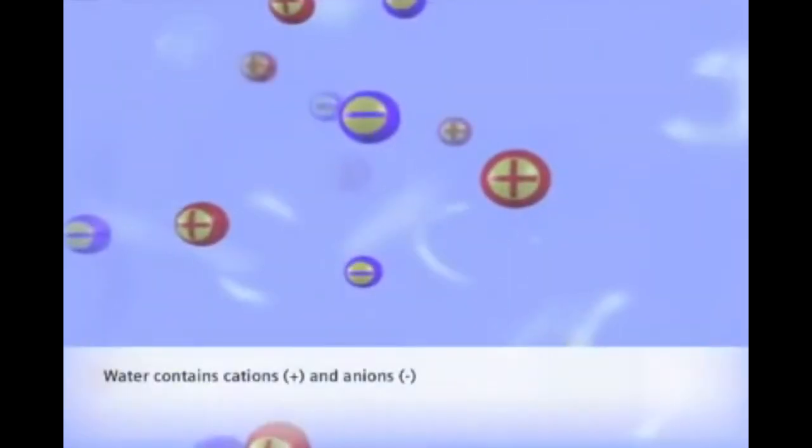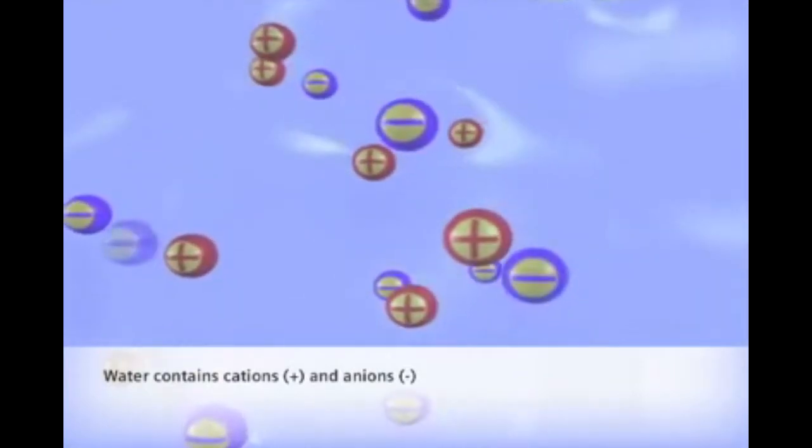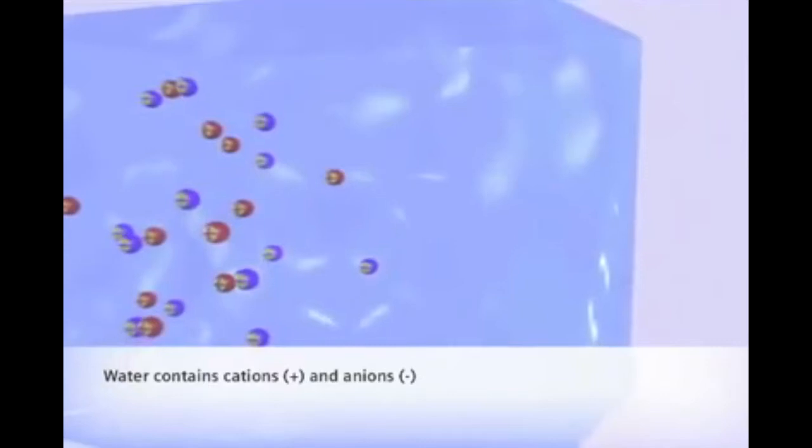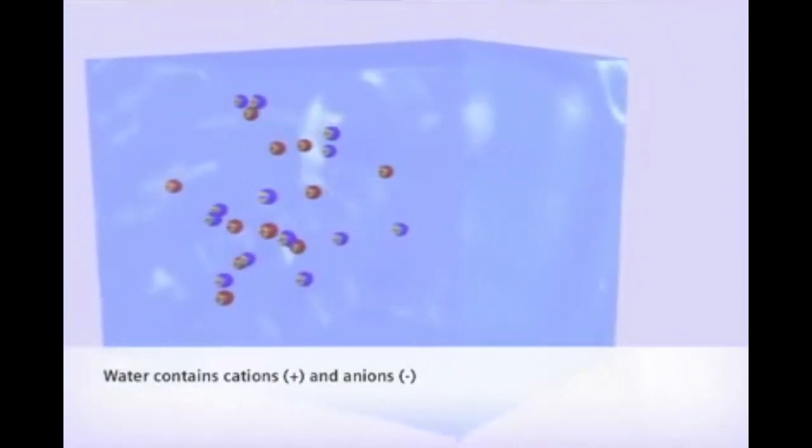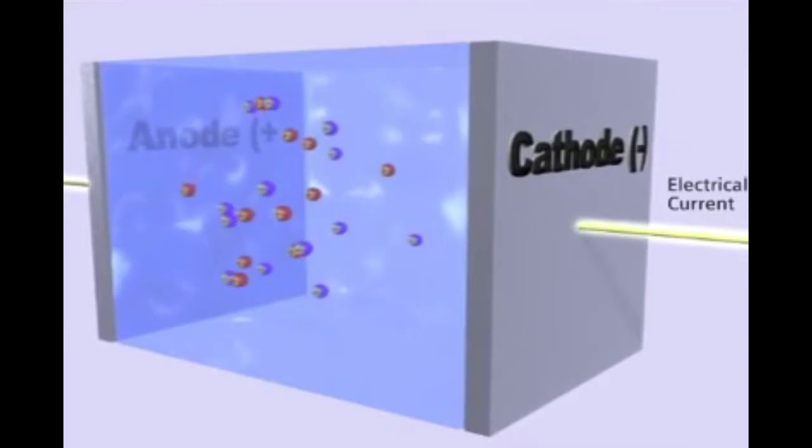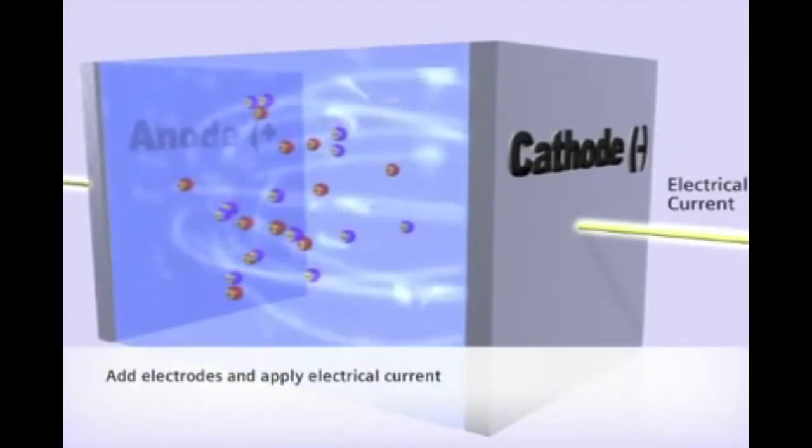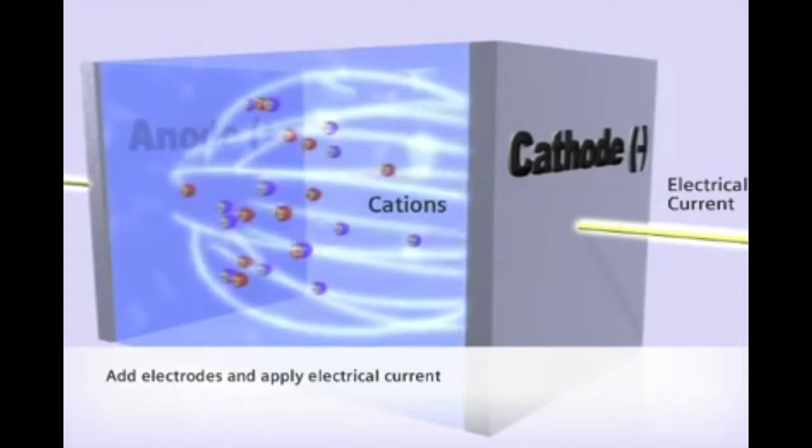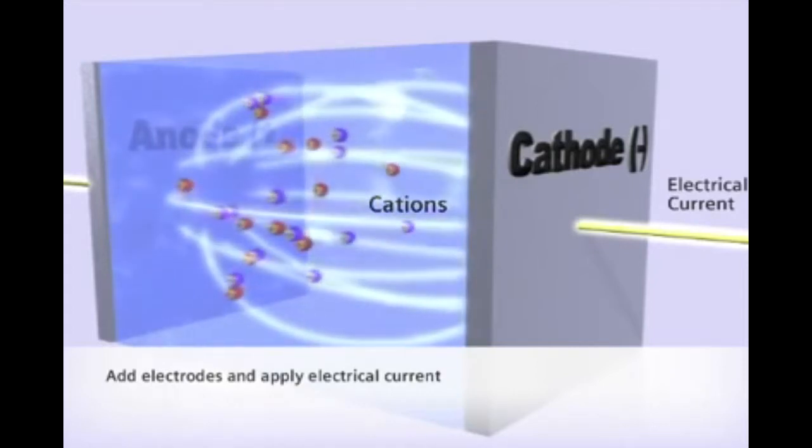Water contains positively charged cations, represented by plus signs, and negatively charged anions, represented by minus signs. When a pair of electrodes is inserted and an electrical current applied, the electric field drives the cations in the direction of the cathode and simultaneously drives the anions in the opposite direction toward the anode.